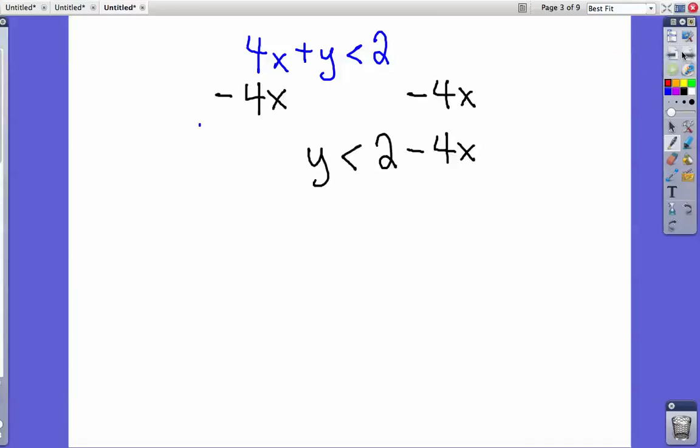The first thing you have to do is move the x's. Subtract 4x from both sides to move the x to the other side. I like to write it in standard form so it's easier to see, so I put the negative 4x first and the plus 2 second. We have the equation y is less than negative 4x plus 2.